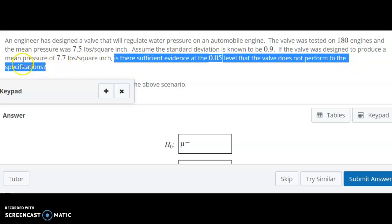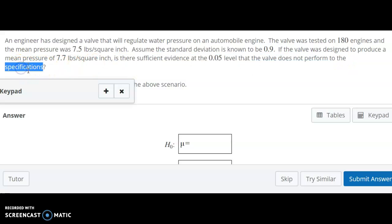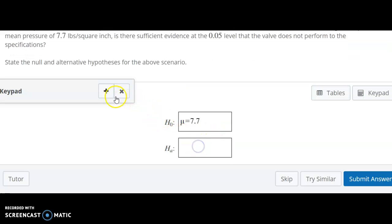But here, that the valve does not perform to the specifications. So the specifications is what we're looking at. Which of these two is the specifications? Well, this is coming from the sample. This is the sample mean. Later, we'll see that's labeled as X bar. This one right here is the specifications. It's what the design, what the valve was designed to produce. So that's what we want to use in our null.